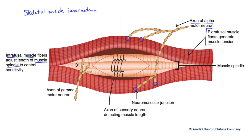What this muscle spindle does is it has afferent axons — in other words, sensory neurons — that are wrapped around these muscle fibers in the middle of this muscle spindle. And when this muscle is stretched, those afferent fibers generate action potentials telling us that muscle length is changing and, in this case, increasing. That will create reciprocal contractions of the extrafusal fibers to protect against that stretch.